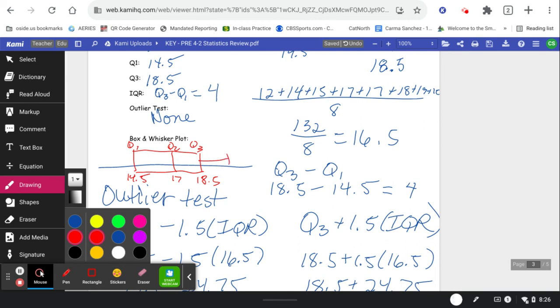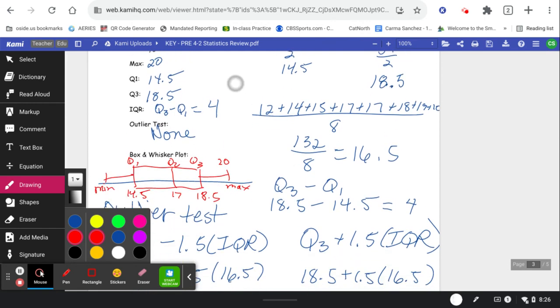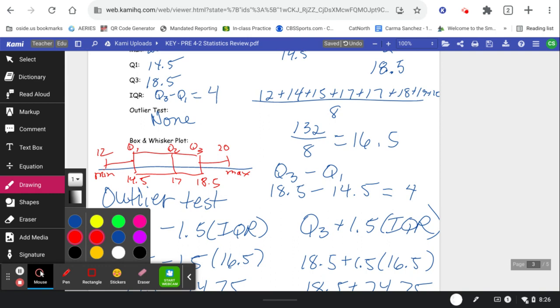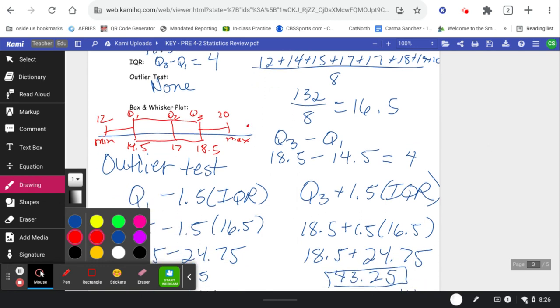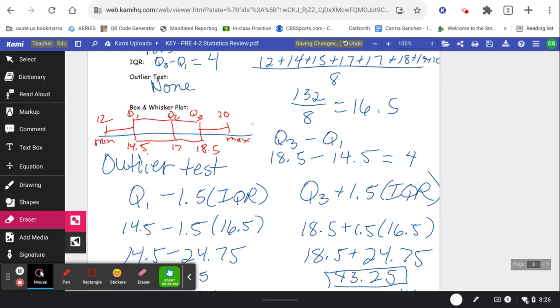Now we're going to make the whisker go out to 20, my max, and make the other whisker go down to the min, which in this case was 12. That's it. That's your box and whisker. The box and whisker goes from the Q1 to the Q3. Don't forget to write the median Q2 in the middle. And then your whisker goes out to the max and your whisker goes down to the min. We don't have to draw any outliers on this one because there are no outliers.